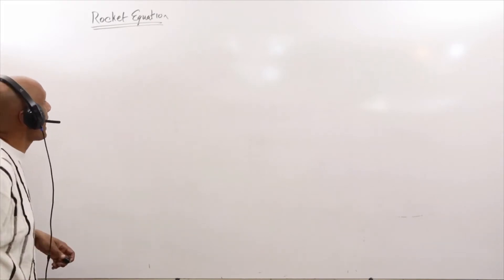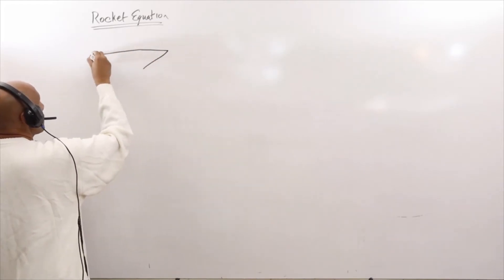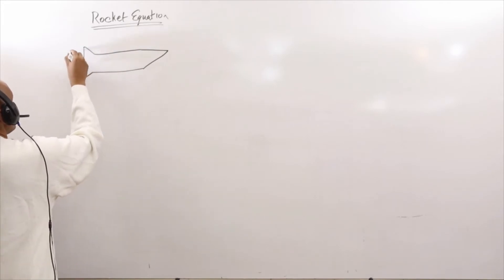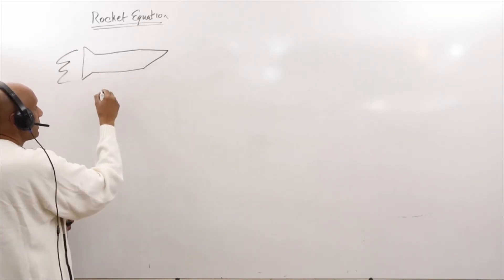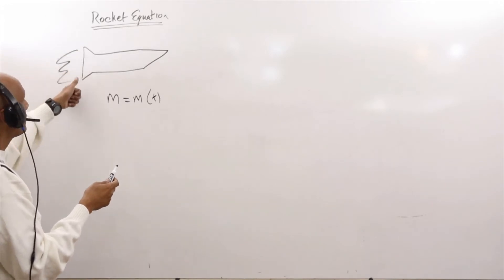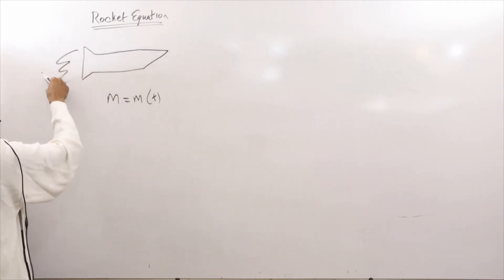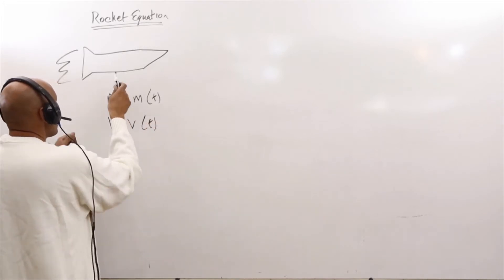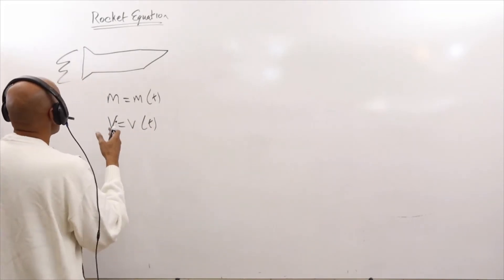The idea behind the rocket equation is that you have a rocket out in space. It's got a big cone in front, a long body, and an engine. This engine has thrust, so it's going to the right. I'm going to assume that the mass of the rocket is given by m, and it is a function of time — mass is changing. As we expel gas from the rocket, the mass of the rocket is being lost, getting smaller and smaller. We're sending mass out the back of the engine, so the velocity is also a function of time. As the gas escapes, the rocket gets faster and faster.